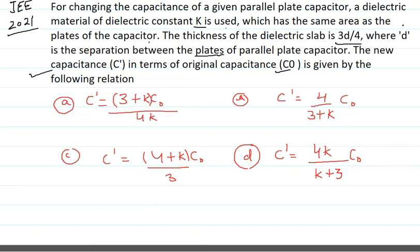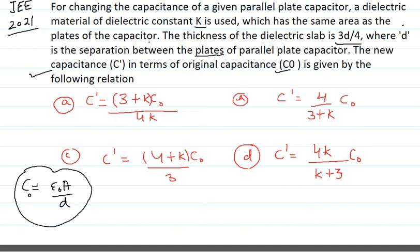For a parallel plate capacitor, the capacitance is equal to epsilon naught A upon d, where A is the area and d is the separation between the plates. This original capacitance is denoted as C naught, so C naught is equal to epsilon naught A by d. Now to change the capacitance, we insert a dielectric material of dielectric constant capital K, and the new capacitance C' has to be expressed in terms of C naught.